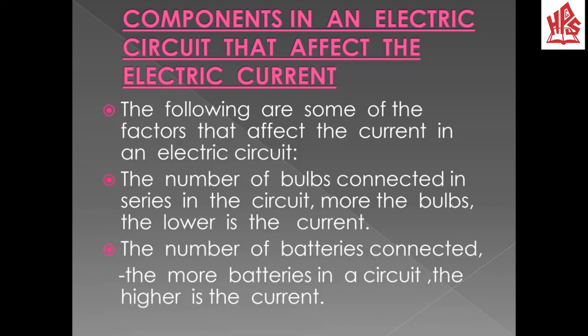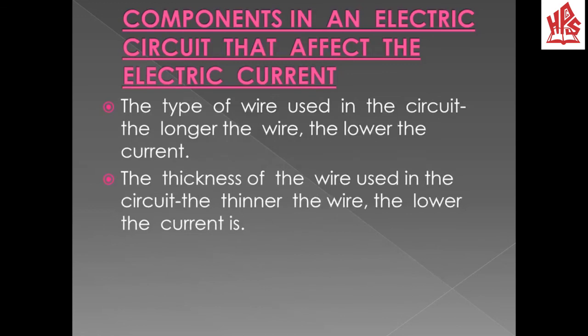Now let's discuss the factors that affect the flow of current in an electrical circuit. The first factor is the number of bulbs connected in series — the more bulbs added, the lower the flow of current. The second factor is the number of batteries connected — the more batteries in a circuit, the higher the current.